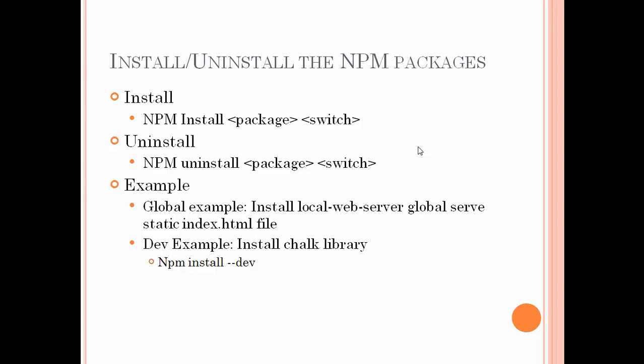Global dependencies — basically those dependencies are installed on your machine where you are going to run your project. They are directly installed where npm is installed. They are basically installed and available, with their exe files added in your environment variable, so you can run those commands anywhere in your command prompt.